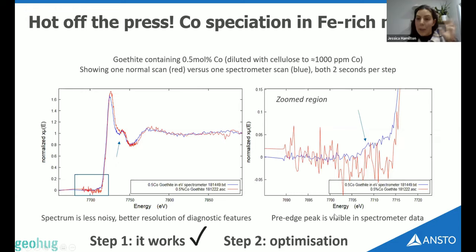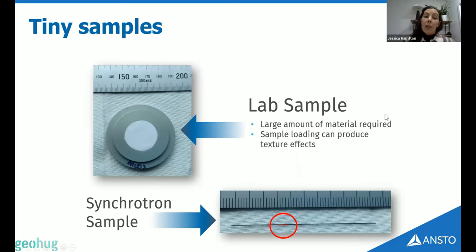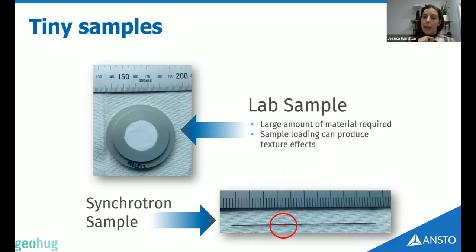At least we proved it works — that's step one. Now we've just got to work on doing it better. To summarise with some practical notes: why should we use a synchrotron? The light is so much brighter than a lab source, meaning we can work with really tiny samples — just a speck of dust in a tiny capillary rather than the larger amounts needed for lab-based XRD.